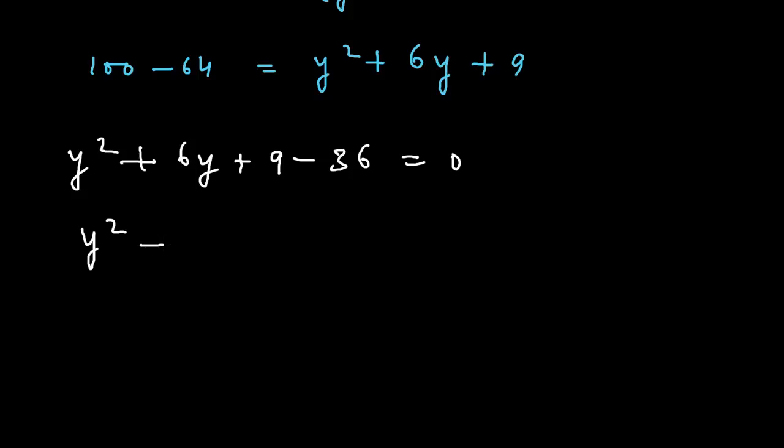Then it becomes Y square plus 6Y minus 27 equals 0.